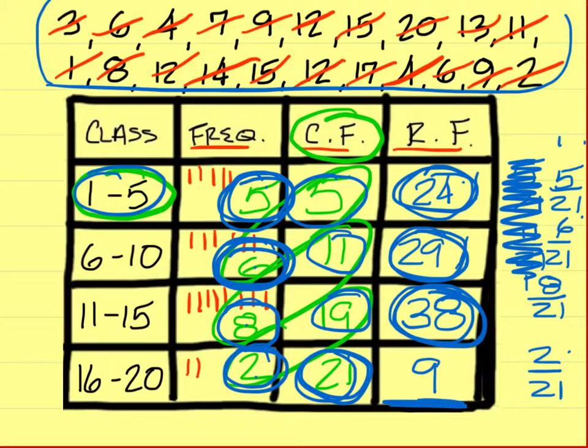To get the percentage, you divide the frequency by the number of numbers you have. Five divided by twenty-one, and then multiply by a hundred and round to the nearest one. So that should be twenty-four. You do the same thing for six through ten and eleven through fifteen. You get twenty-nine and thirty-eight.